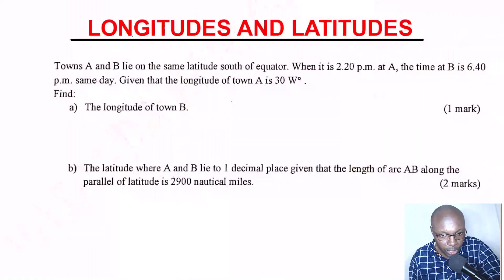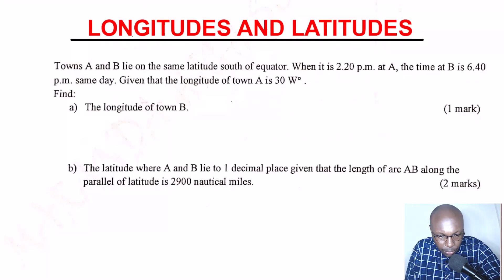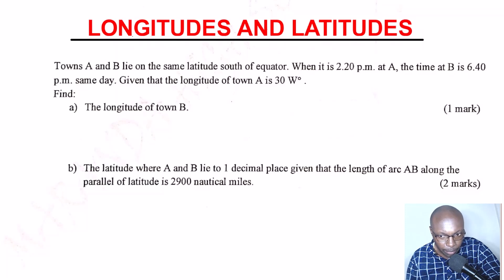Hello and welcome. Let's have this question on longitudes and latitudes. The question reads: Towns A and B lie on the same latitude south of the equator. When it is 2:20pm at A, the time at B is 6:40pm, same day.